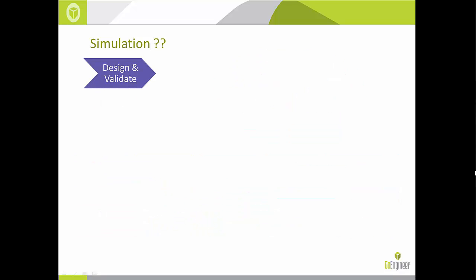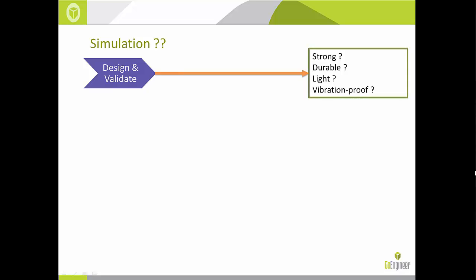To validate a product, an engineer must answer questions: Is it safe? Is it strong? Is it durable? Is it lightweight? We call these design parameters. Determining them requires multi-faceted engineering expertise and thorough knowledge of the physical system. Manual calculations can be challenging, especially for completely new products with complicated geometry and no empirical information available to estimate and validate those parameters.